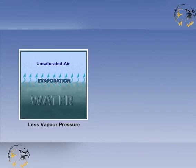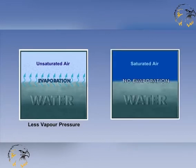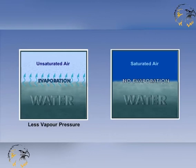Let us consider an enclosed box, half filled with water, with air filling the rest of the box. Initially, the air above the water is unsaturated, and there will be a value for the vapour pressure. However, evaporation will immediately start to take place. If we left this box alone for long enough, enough water will have evaporated from the water surface for the air to become saturated. At this point, evaporation will stop, and the vapour pressure will also cease to rise. This maximum value of the vapour pressure occurs at saturation, and is called the saturation vapour pressure.